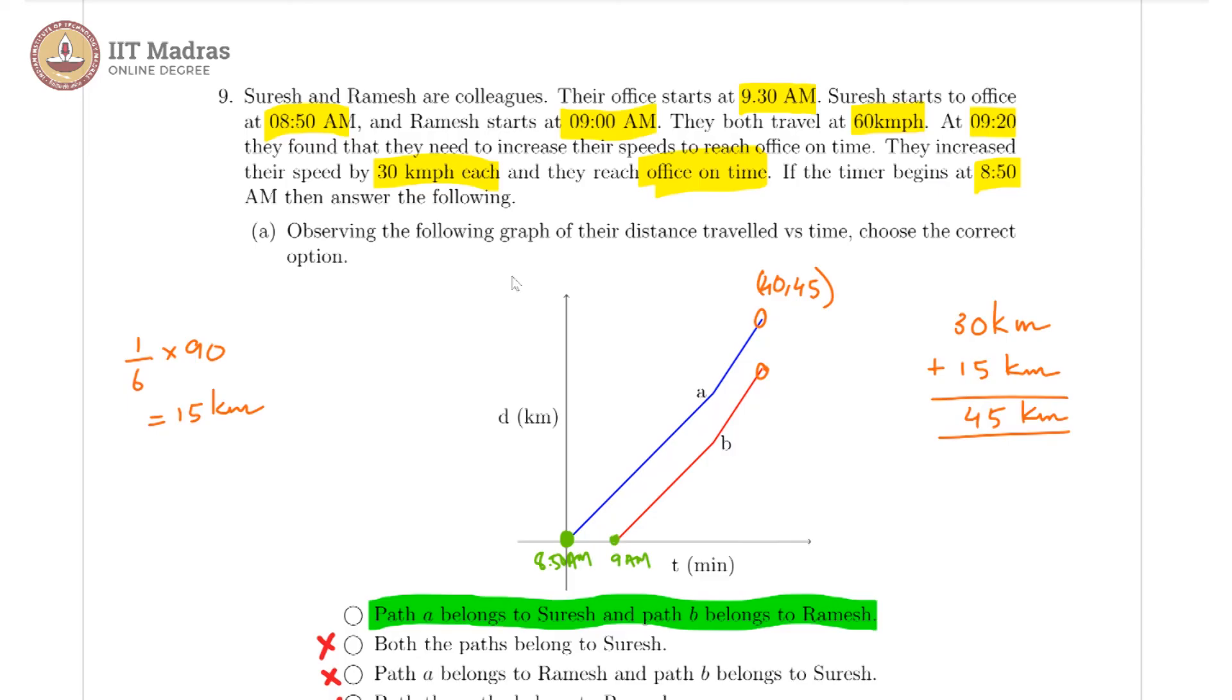Whereas Ramesh also covered the same 15 km in those 10 minutes, but in the initial time here, he did not cover 30. He instead covered 20 minutes as one-third of an hour into 60 gives us 20 km. So Ramesh covered 20 km plus 15 km, giving us 35 kilometers overall.